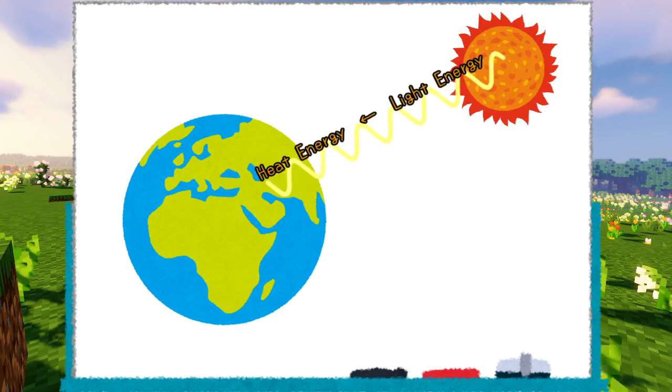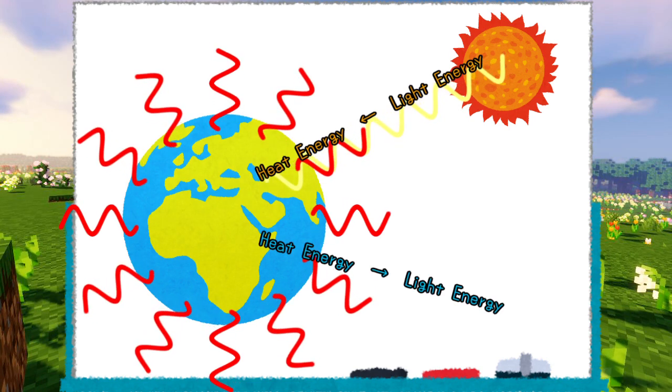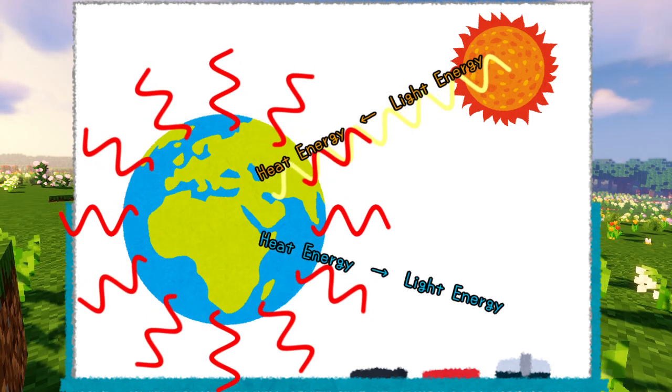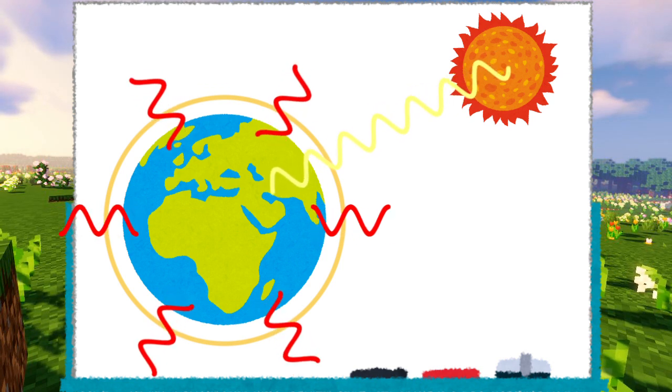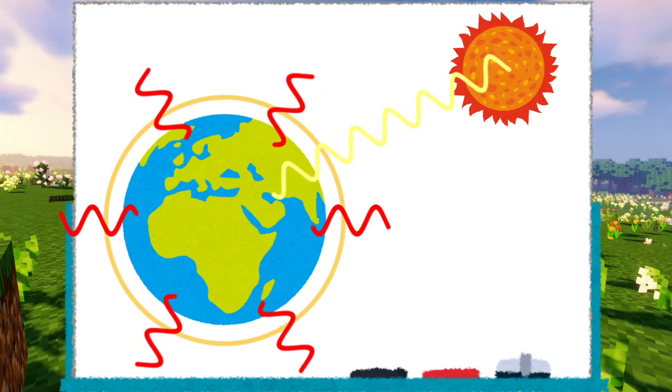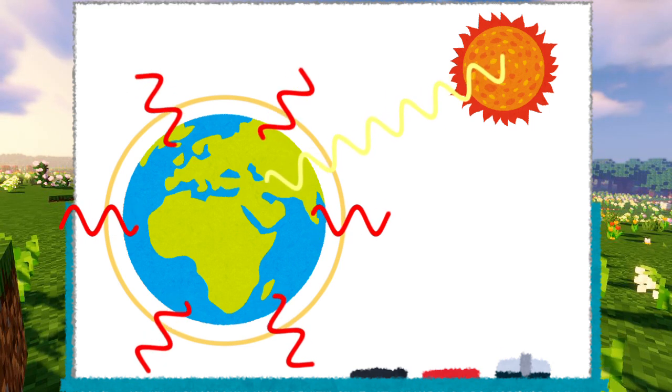To summarize, while sunlight warms the Earth, Earth gets colder by releasing its own light called infrared radiation. However, because greenhouse gas absorbs and re-emits infrared radiation, some of that radiation returns back to Earth and makes the Earth warmer.